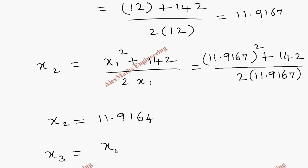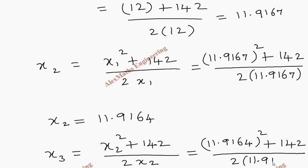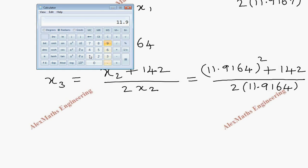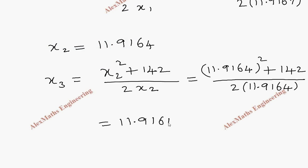Now coming to x3 which is x2 square plus 142 divided by 2 into x2. Now 11.9164 whole square plus 142 divided by 2 into 11.9164. Using calculator, this value is 11.9164 again after rounding off. So we find x2 and x3 are same which is 11.9164.